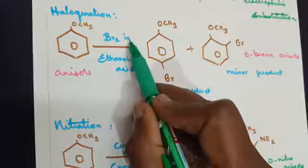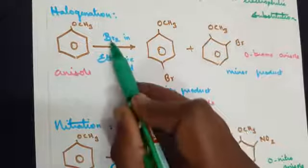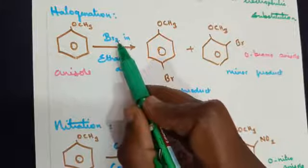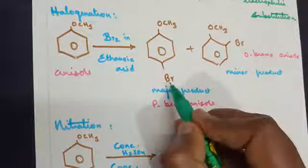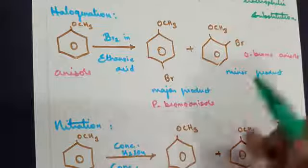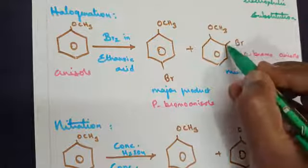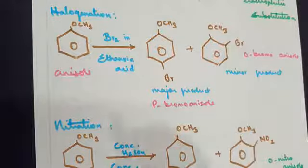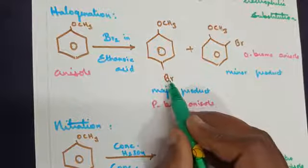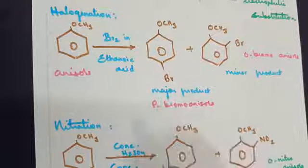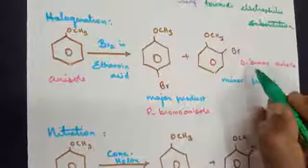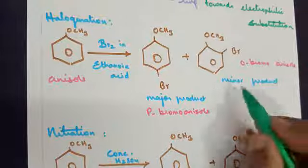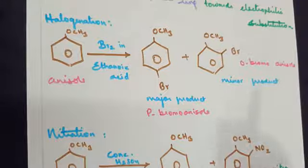When you treat with bromine in ethanoic acid, bromine has two bromide ions. Two types of products are possible: one at the para position where bromide goes in, the other at the ortho position where the bromide ion goes in. As I told you, the para position product will be the major product, named parabromoanisole. Here, orthobromoanisole is the minor product. Only so much you need to remember.